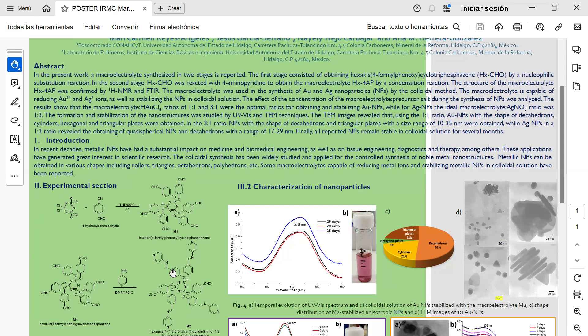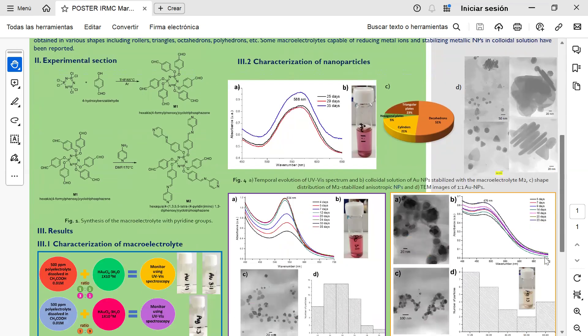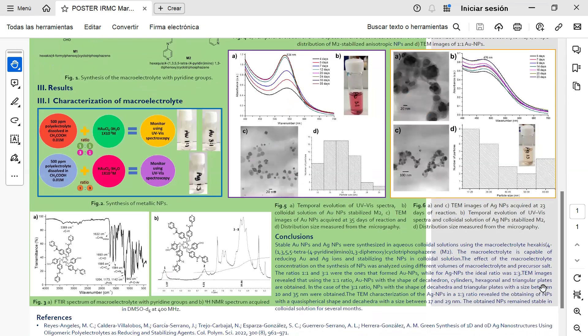The structure of the macroelectrolyte was confirmed by proton NMR and FTIR techniques. The macroelectrolyte was used in the synthesis of gold and silver nanoparticles, NPAs, by the colloidal method.